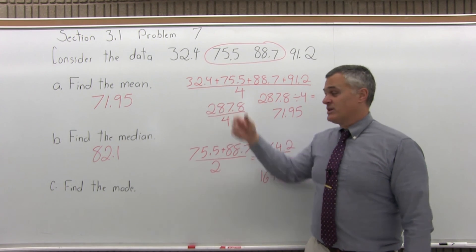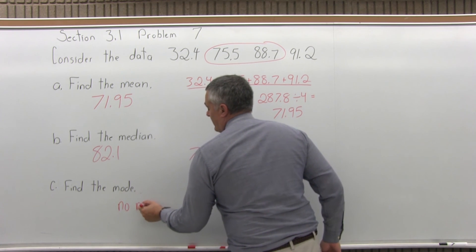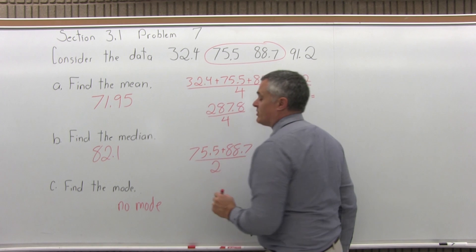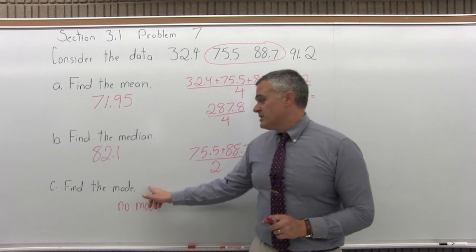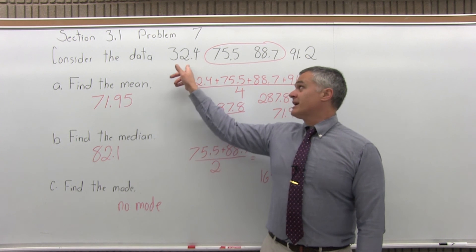Nothing is repeated more than any of the others. So the answer for mode is no mode. And you can't put zero. That's different than putting no mode. If you say mode is zero, that means zero occurs more than any other data value, which is not the case for this problem. You have to actually write no mode.